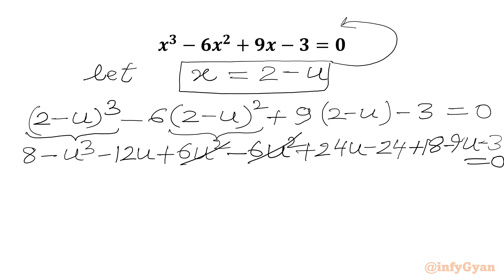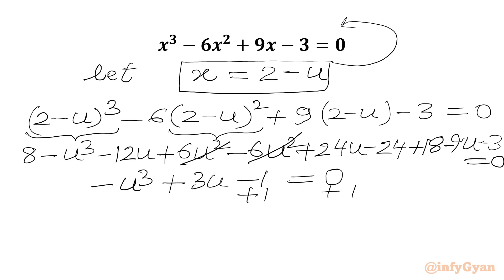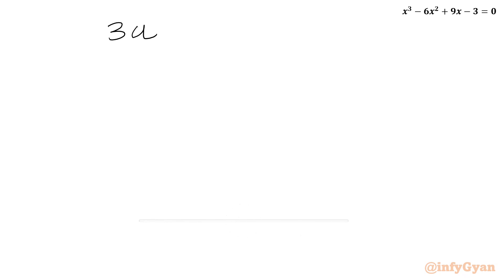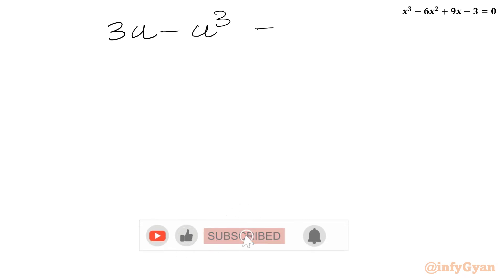Now we simplify the left-hand side and get minus u³ plus 3u minus 1 equal to 0. I will add 1 to both sides, so the minus 1 from the left-hand side cancels, and we get 3u minus u³ equal to 1.